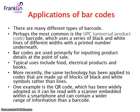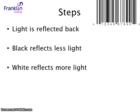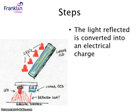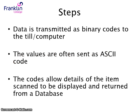In summary, a barcode reader uses infrared light, which is shone at the barcode. There is a moving mirror and prisms. Light is reflected into the barcode — black reflects less, white reflects more. A Charge Coupled Device, a light sensor, measures the amount of reflected light. The reflected light is converted into an electrical charge, which is then converted into binary code. The binary code is transmitted to the computer and to the till, often represented as ASCII, and the product details are returned.